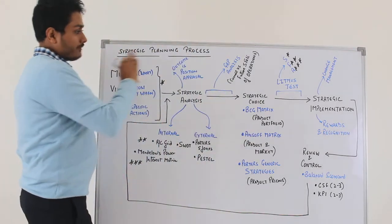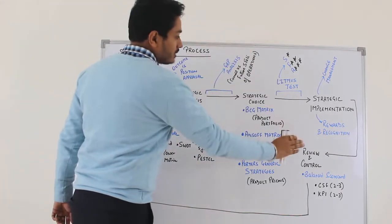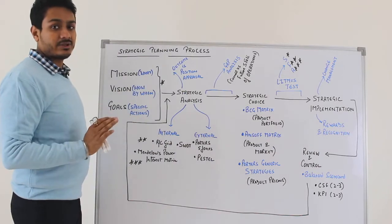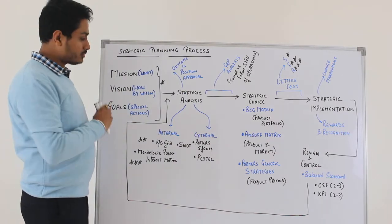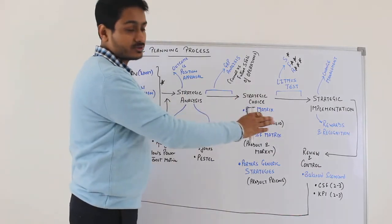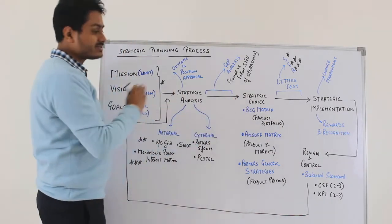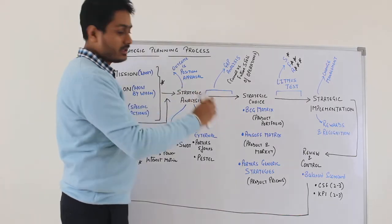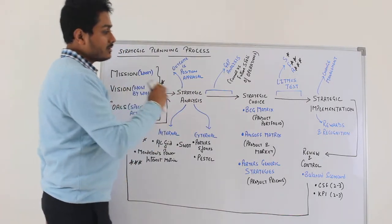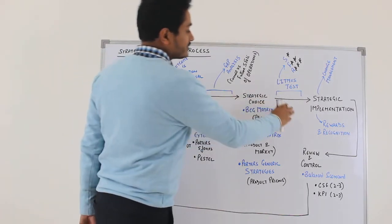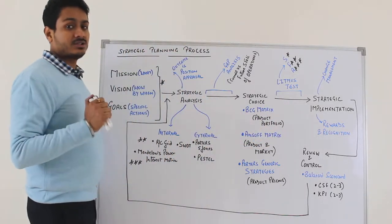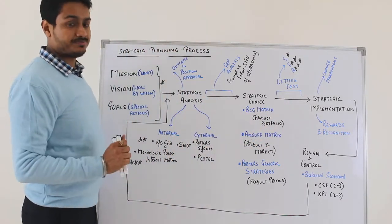If you see the diagram on screen, we have drawn an entire diagram in terms of how the strategic planning process works. It's a step-by-step process. We will walk through every step, and this is what is a summary of enterprise management.